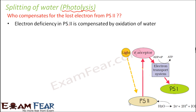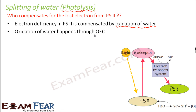Electron deficiency in PS2 is compensated by oxidation of water. Oxidation of water means splitting of water into hydrogen ions, electrons, and oxygen. These electrons are sent back to PS2 to fulfill the deficiency. This oxidation of water happens through OEC — the oxygen evolving complex.